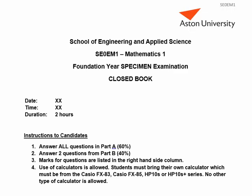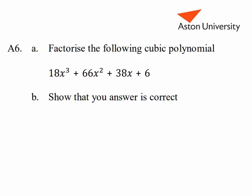Mathematics 1, specimen examination paper, question A6. Factorise the following cubic polynomial. We're going to start by seeing if we can guess a value for x which gives the expression the value 0.